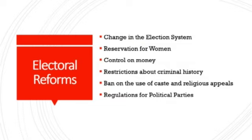Now, a few suggestions or reforms for the election process of Indian democracy. First is change in the election system — our country's election system should be changed to proportional representation from the FPTP system, so that parties will get seats proportional to their vote share. Second is reservation for women — seats should be reserved for women in the Parliament. Third is control on money — politicians spend too much money at the time of election, so election expenses should be paid by the government to control the role of money in electoral politics.